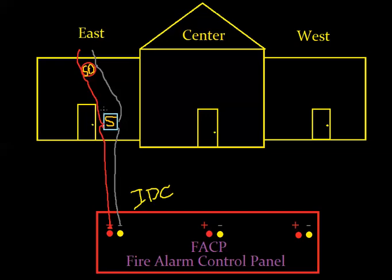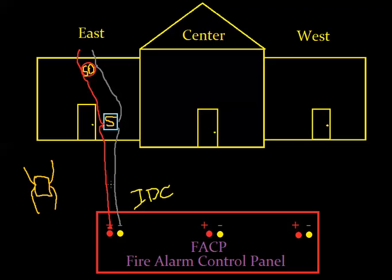These are called normally open contact devices. On the pull station, internally, you have a wire coming in one side and a wire coming out the other, and these wires are not touching internally. The pull station does not draw any current — the circuit is not being passed through it, it just goes right back out the other side. That's a normally open device. In a normal state, meaning it hasn't been pulled, the circuit just goes into and out of it. It's kind of like a light switch that isn't on.